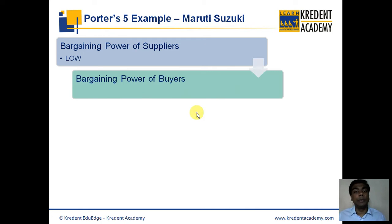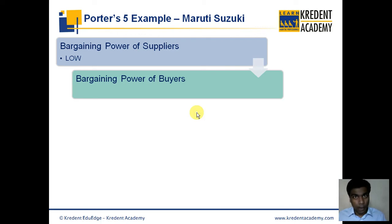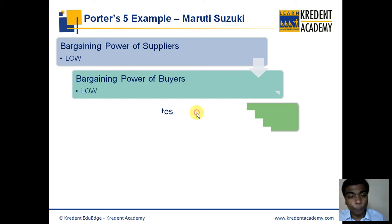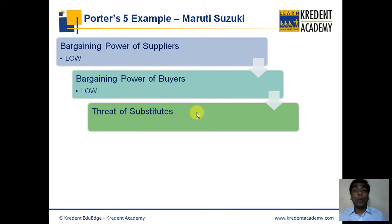What about the bargaining power of buyers? The buyers of Maruti Suzuki's products are individual people who buy its cars. It is impossible for individual buyers to directly negotiate with Maruti Suzuki on car prices. Buyers may negotiate with dealers, but that only affects the dealer's margin — Maruti Suzuki's prices remain effectively fixed. Hence, the bargaining power of buyers is also low for Maruti Suzuki.